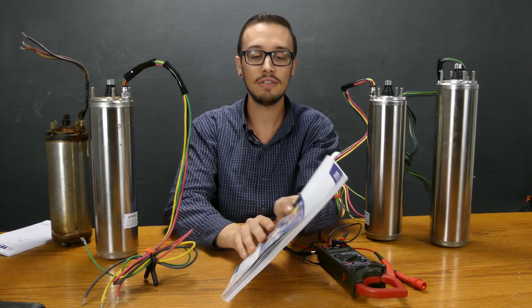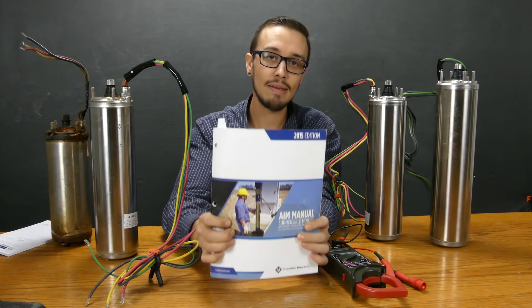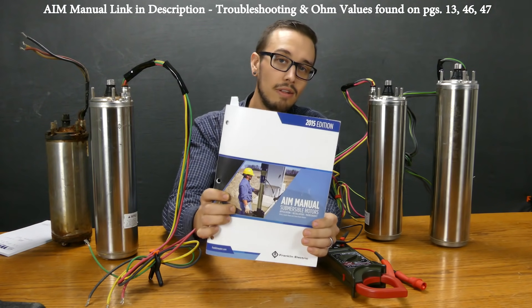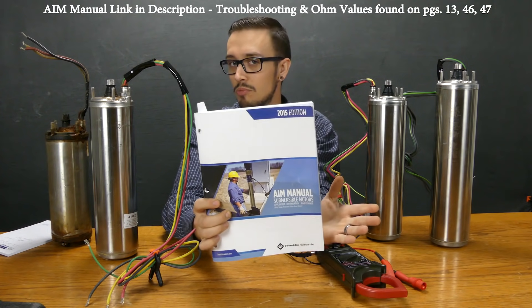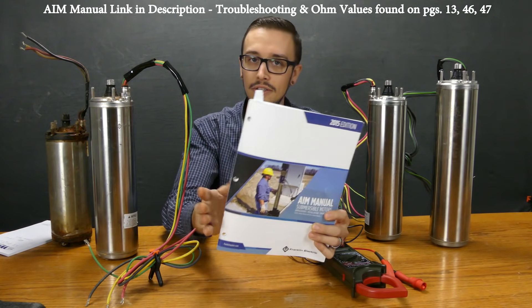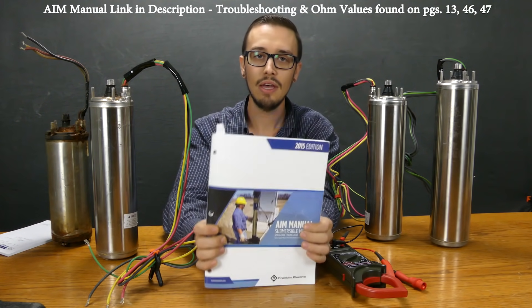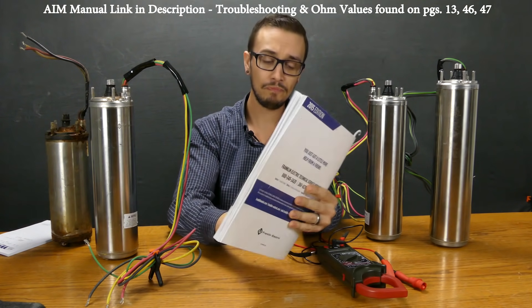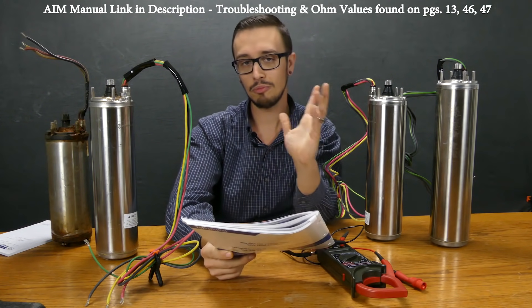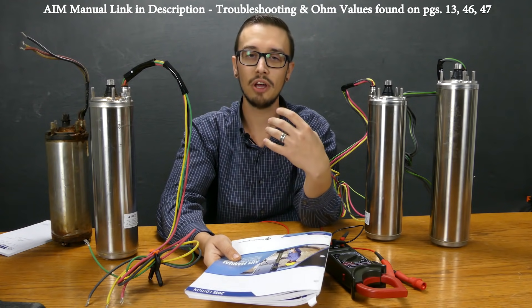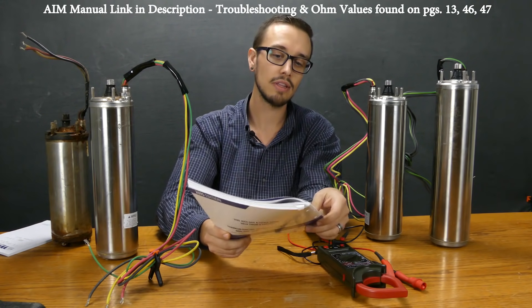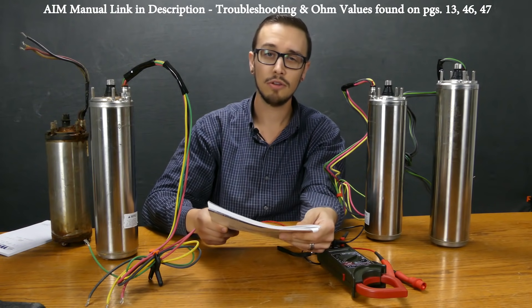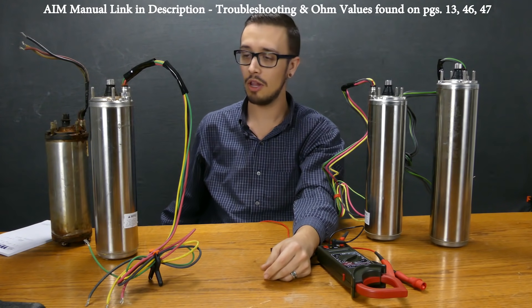Before I get started on doing these tests I want to remind everybody that the AIM manual - this is the holy grail of submersible well testing and testing of any of the components in your system. This is going to be in the description below. For these particular tests you're going to be using pages 13, 46, and 47 in this book so you can refer to those if you want to kind of follow along.